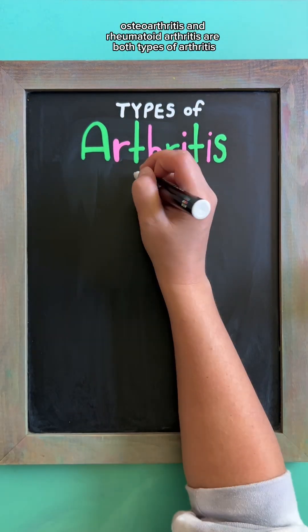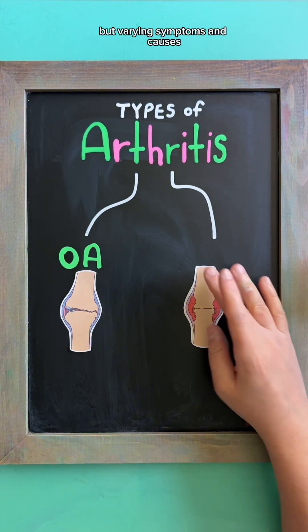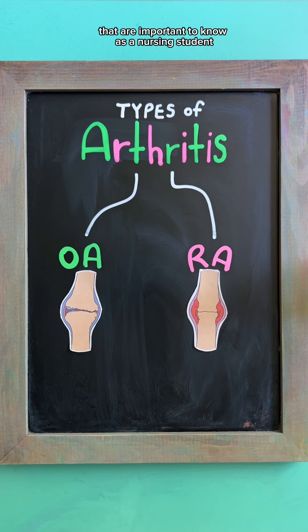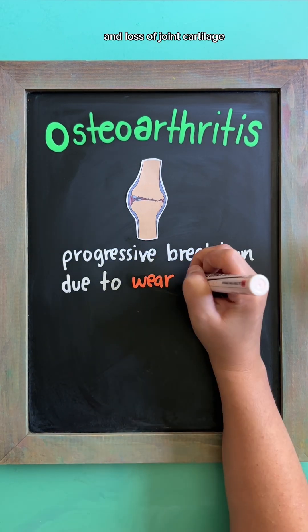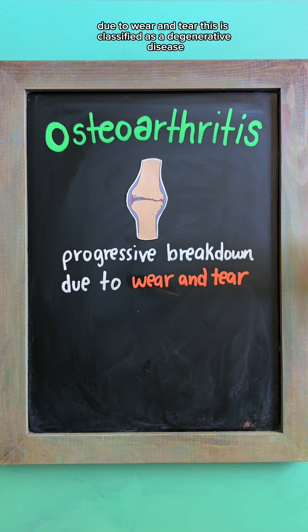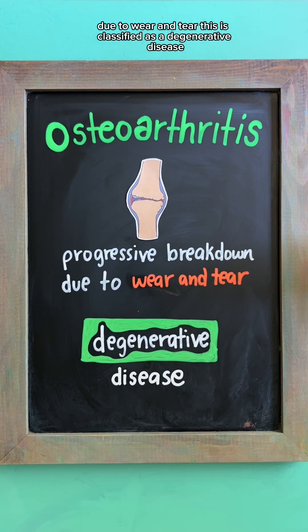Osteoarthritis and rheumatoid arthritis are both types of arthritis, but vary in symptoms and causes that are important to know as a nursing student. Osteoarthritis involves progressive breakdown and loss of joint cartilage due to wear and tear. This is classified as a degenerative disease.